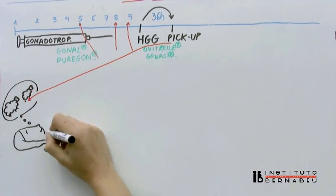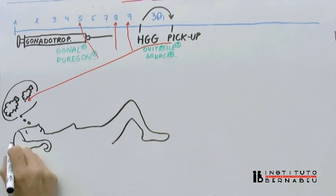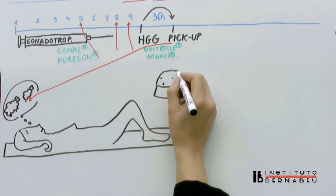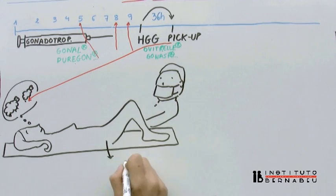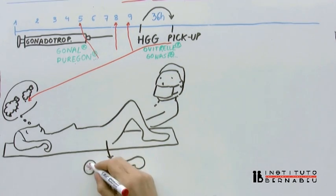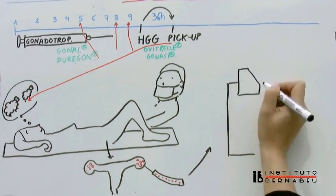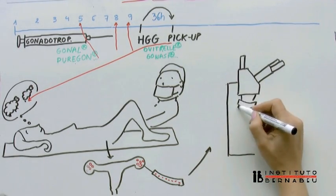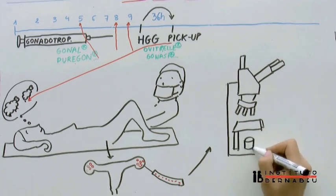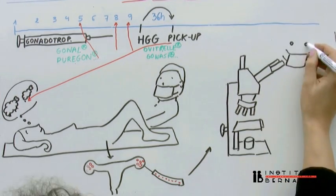The eggs are collected in about 10 minutes on an outpatient basis. The procedure is completed under light sedation and with the help of vaginal ultrasound, with minimal discomfort and risk to the patient. The gynecologist aspirates follicular fluid, which is then immediately studied by the biologists, who prepare the retrieved eggs for fertilization.